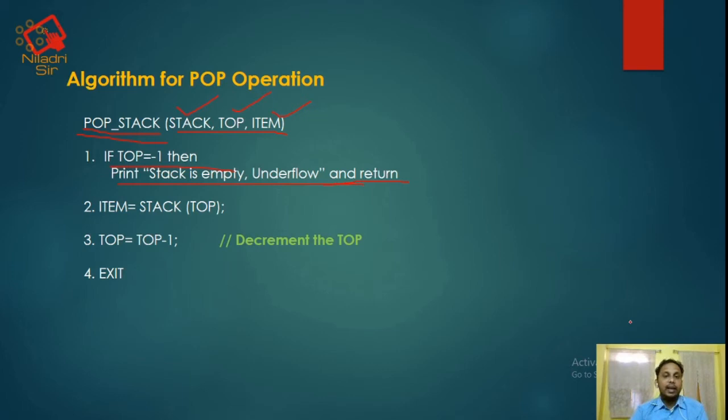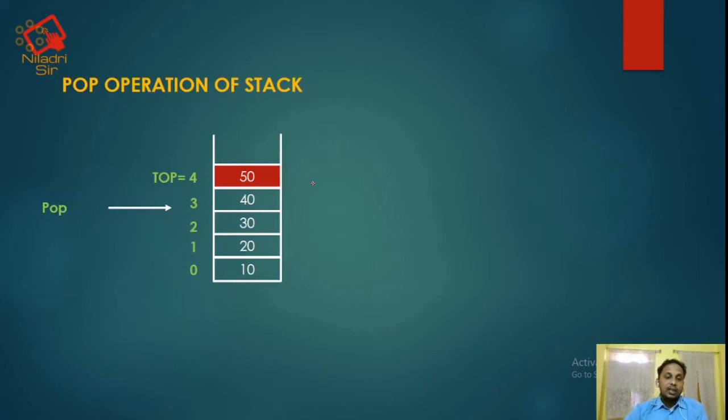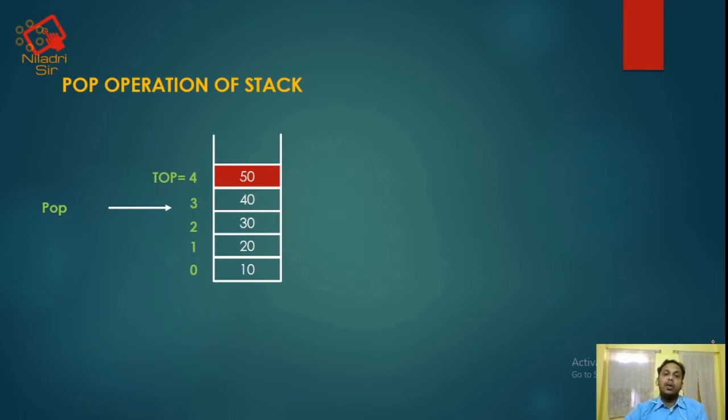Let us go to the example. Suppose there are 5 elements in the stack: 10, 20, 30, 40, and 50, at index positions 0, 1, 2, 3, and 4. The value of top is now 4. Always remember, in case of POP operation, the topmost element of the stack will always be deleted. We cannot delete 40, 30, 20, or 10 if we do not delete 50 first.